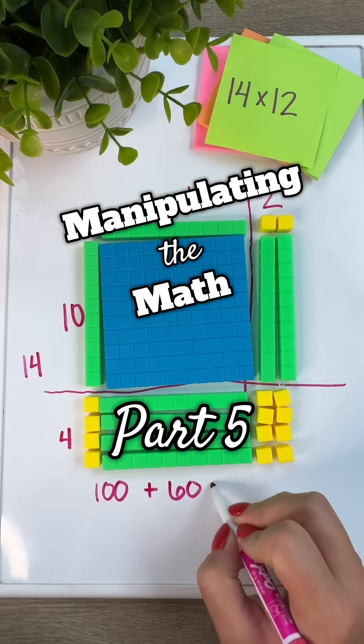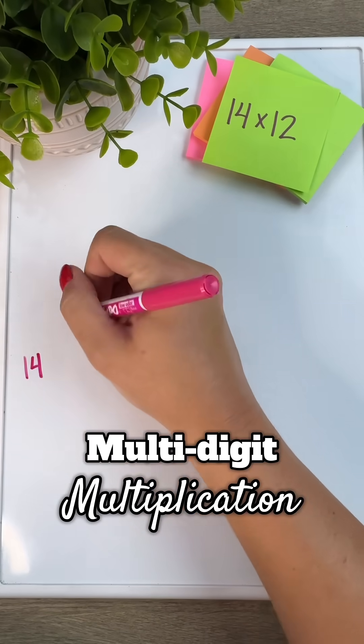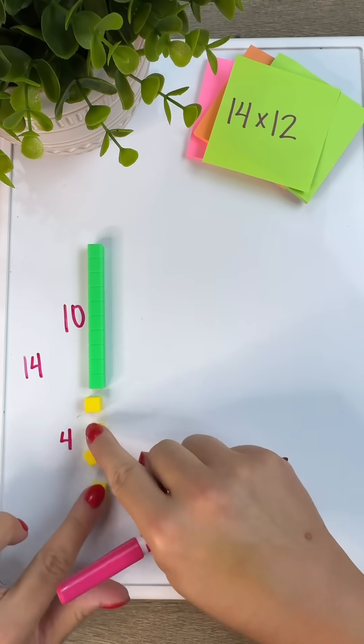Welcome back to part 5 of the Manipulating the Math series where we're working with base 10 blocks. Let's model multi-digit multiplication, first starting with whole numbers and then a decimal example.